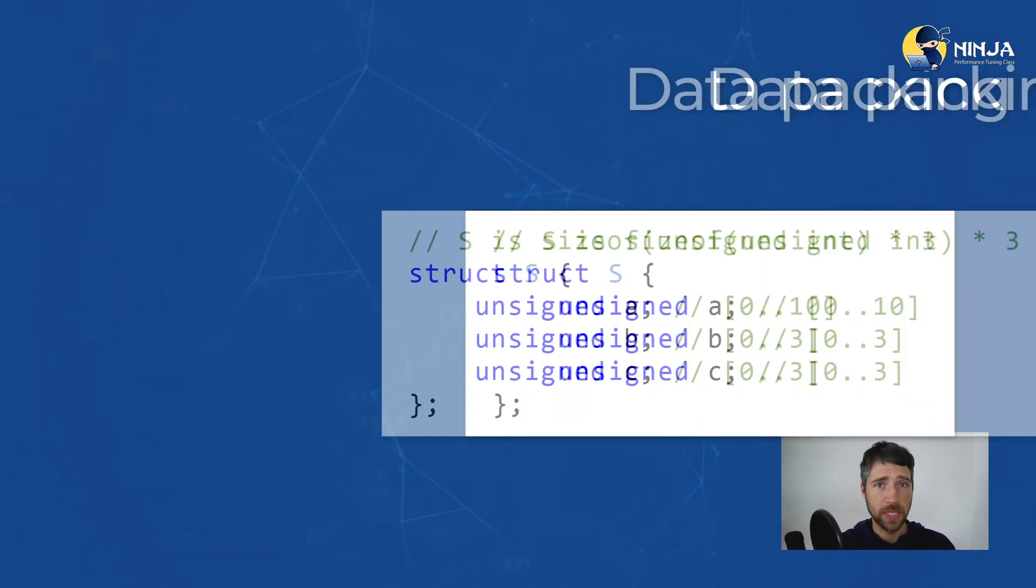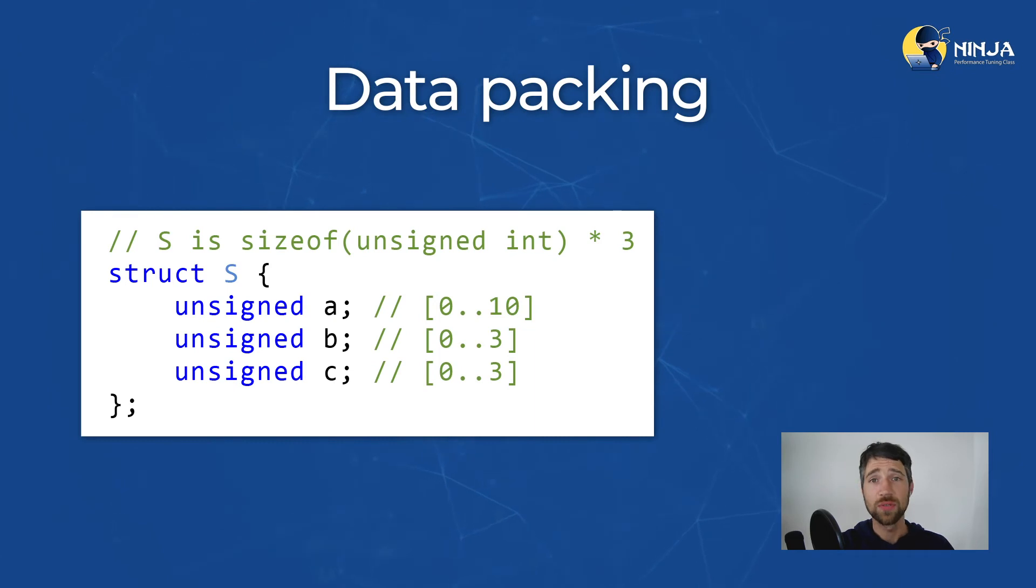The second popular technique to pack your data is using bitfields. Consider struct S, where we have three 4-byte integers, giving us a total of 12 bytes of storage. If we know that the range of possible values for members of struct S is small, we can effectively reduce the amount of memory needed to store them.